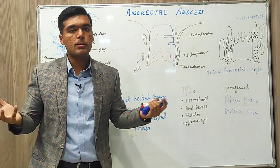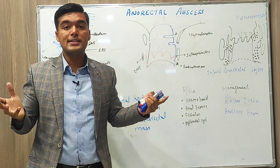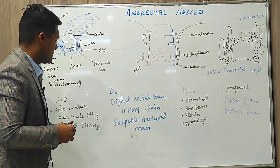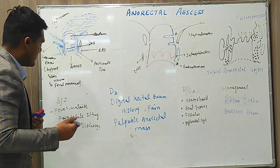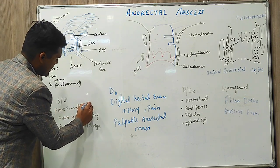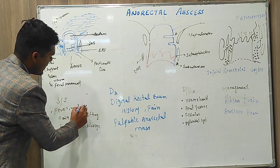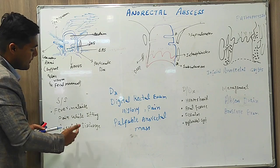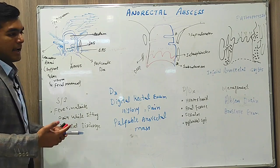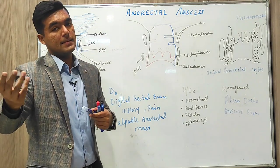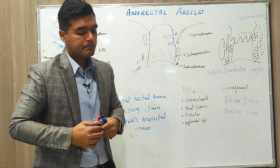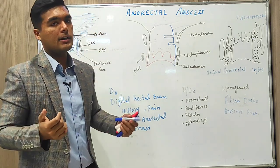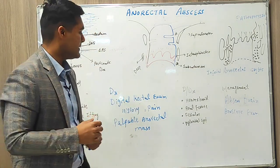Now talking about signs and symptoms: since it is an abscess due to some flora, we have fever and malaise. We see pain while sitting and purulent discharge. So fever, malaise, pain, and discharge are the main signs and symptoms.